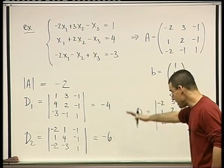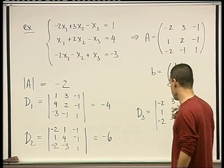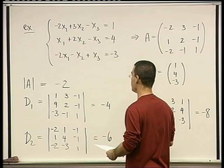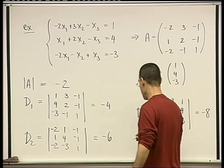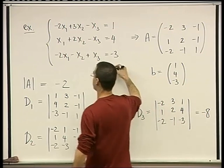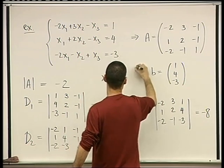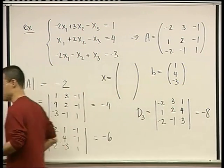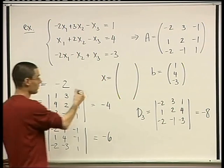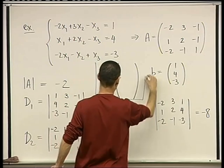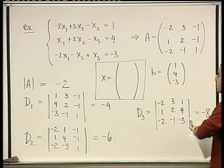And now, once we have this, all this data, our solution, according to the theorem, is, so I didn't leave enough space. Let's write it here. Do we have enough space here? Yeah. So x is going to be a vector with three entries.